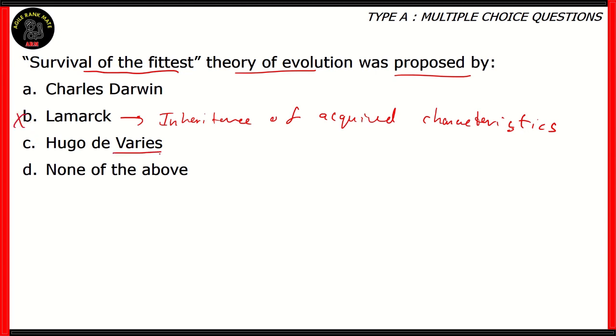What about Hugo de Varies? Hugo de Varies talks about another theory known as the theory of mutation. So here he says that evolution occurs due to sudden and rapid changes across large parts of the genetic makeup of organisms, and that results in the variety of organisms that we have. So therefore, that means option C is also incorrect.